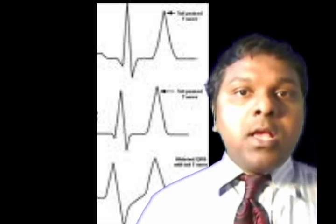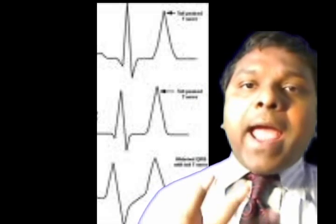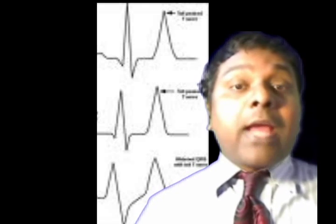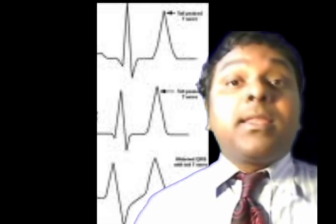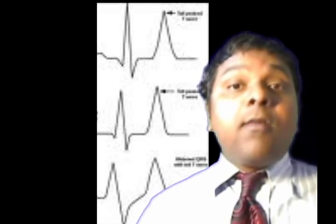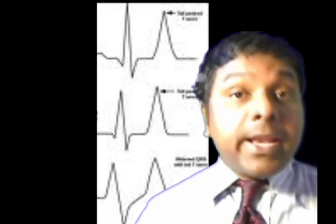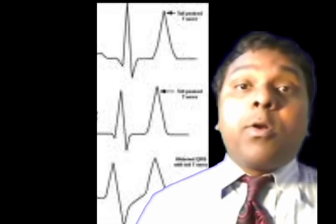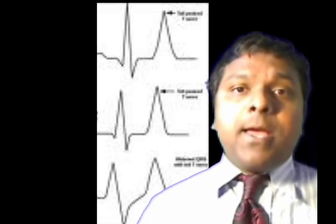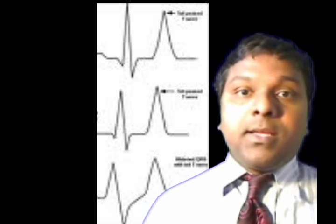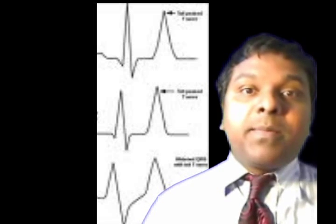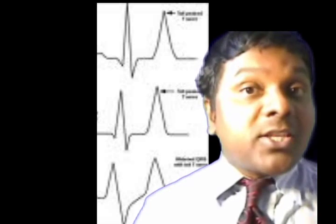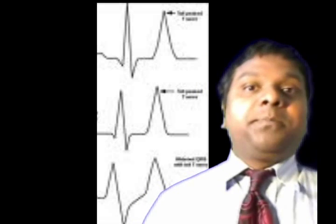To stabilize cardiac membrane potential, give calcium, because calcium directly antagonizes the effects of potassium on cardiac membrane potential. You can use calcium gluconate or calcium chloride. Although calcium chloride contains three times more calcium than calcium gluconate, it causes significant tissue irritation when extravasated, so calcium gluconate is preferred. Exception: in hyperkalemia associated with digitalis toxicity, do not give calcium, as it potentiates the myocardial toxicity of digitoxin.